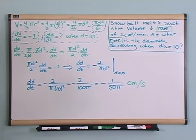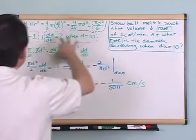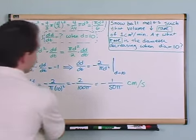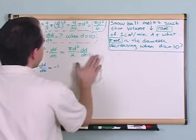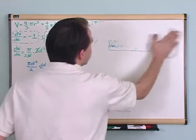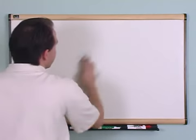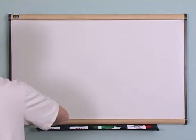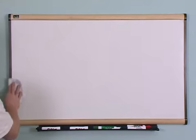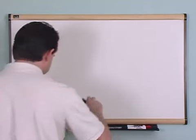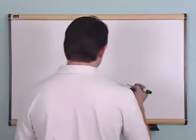So it's really a matter of having the problem down, figuring out what you need, and plotting a course. My advice: write down the problem, draw a picture if you can, write down any formula that's related, and eventually you're going to have to take a derivative of that formula and then solve for a rate of some kind — and that's your answer. So let's try another problem.